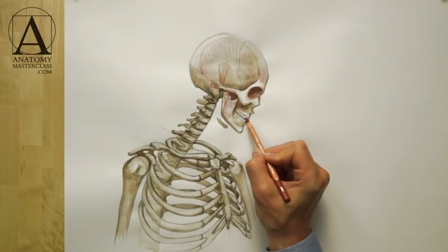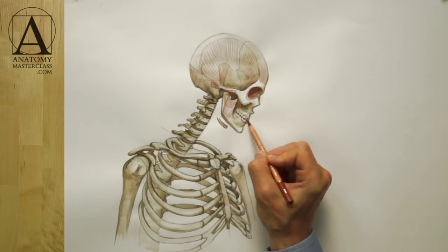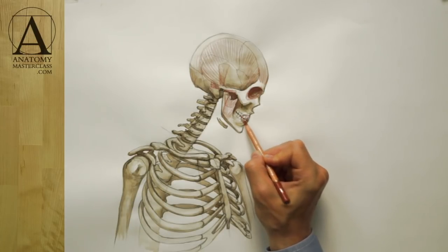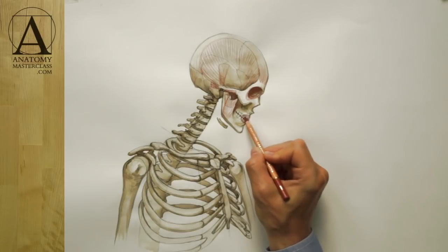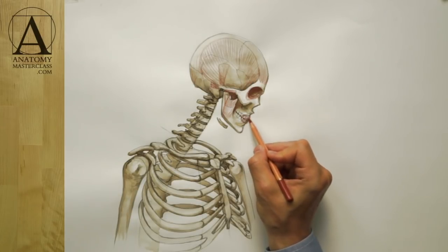There is another important muscle of the human head that has a circular shape. This is the muscle of the mouth. This muscle closes the lips, pulling them together.